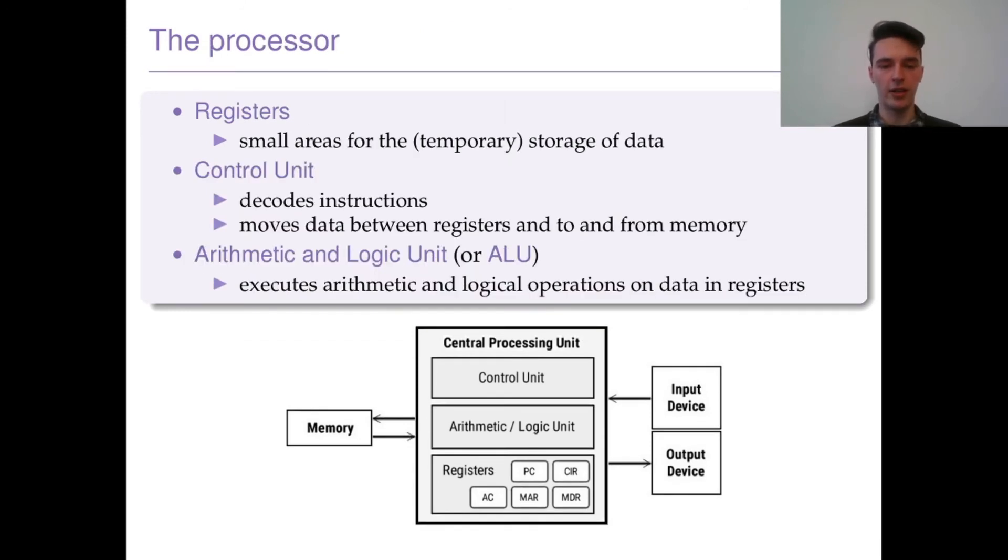Let's drill down into the processor. Registers are very important - they're small areas for temporary storage. Because we're using a 32-bit implementation of MIPS, that's like a 32-bit CPU, that means we have 2 to the 32 possible different register values. We also have the control unit, which decodes instructions.